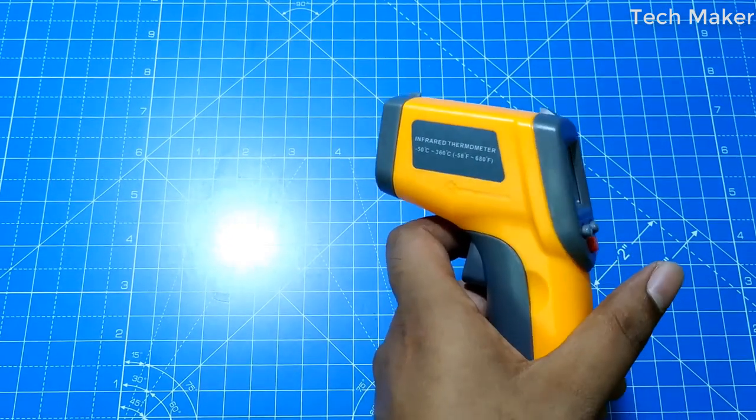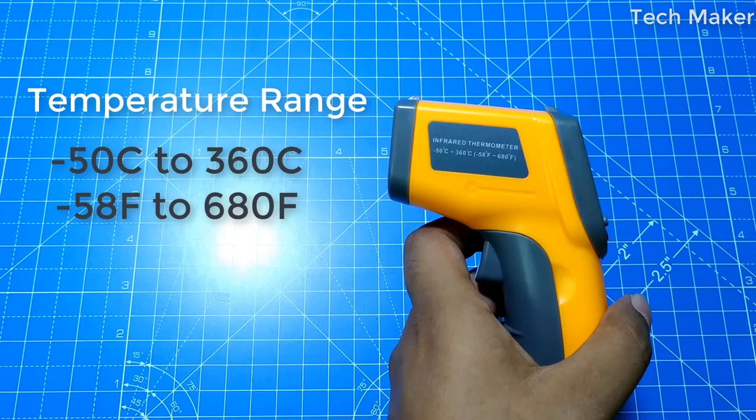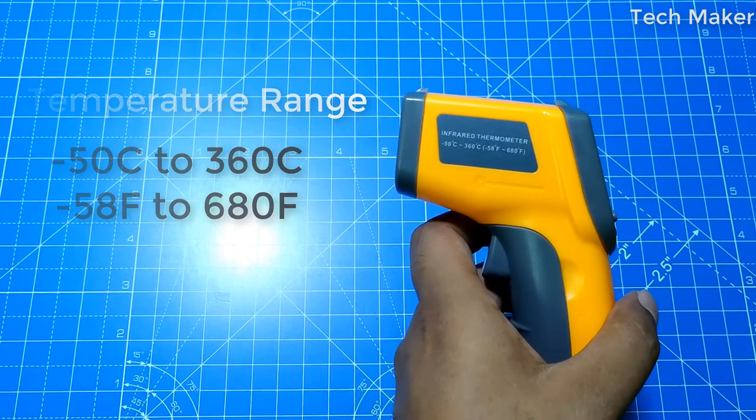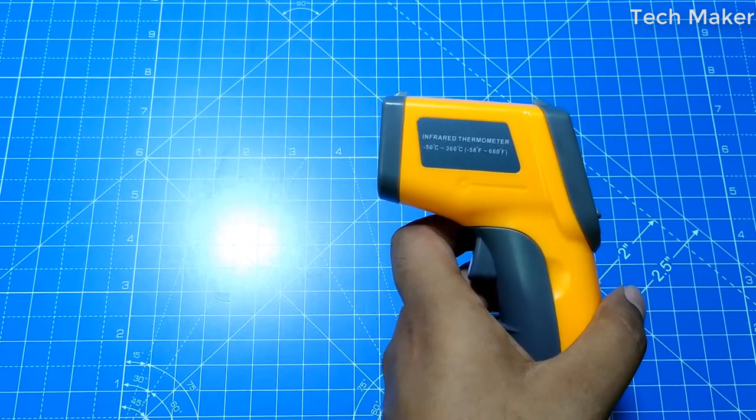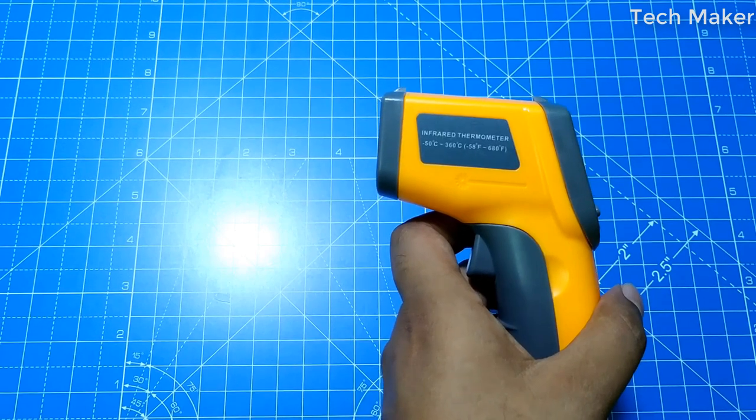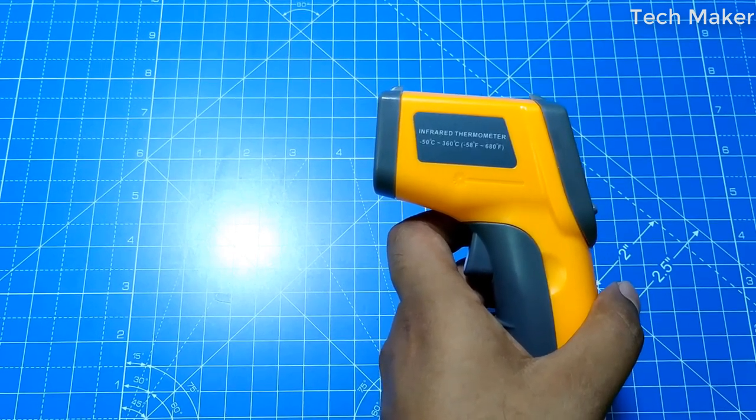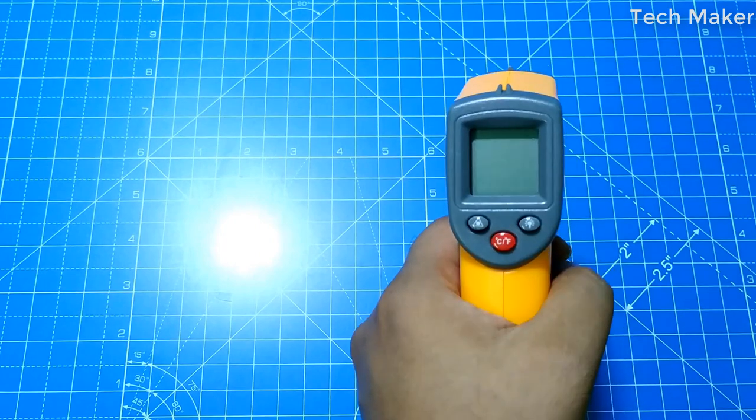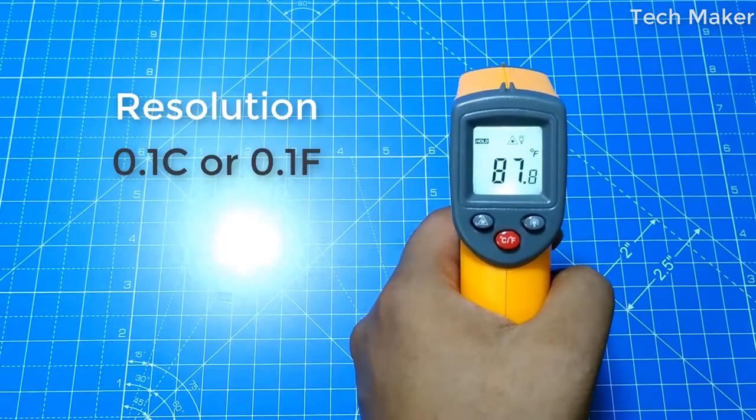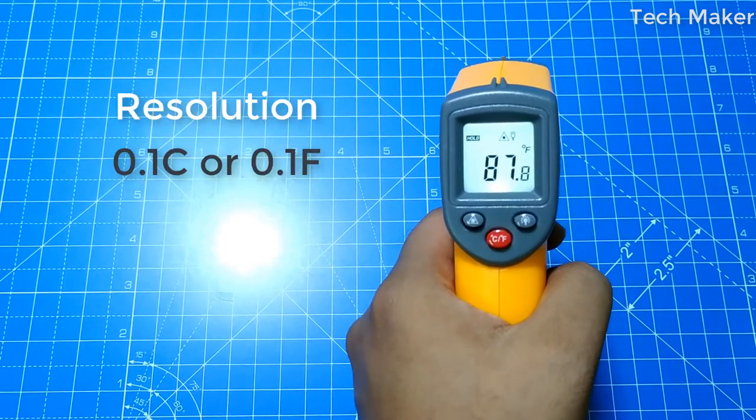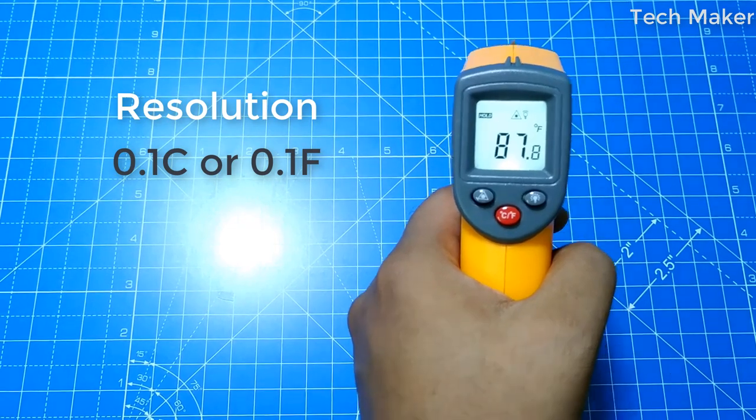While coming to the specifications, it is capable of reading from minus 50 centigrade to 360 centigrade, which is equivalent to minus 58 degrees Fahrenheit to 680 degrees Fahrenheit. And it has the resolution of 0.1. See here, you can see the 0.8, which shows the resolution, the lowest measuring value.